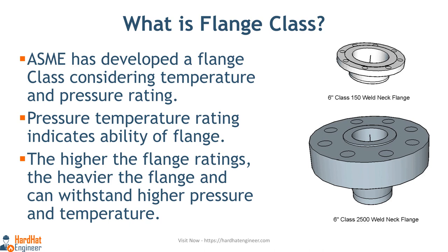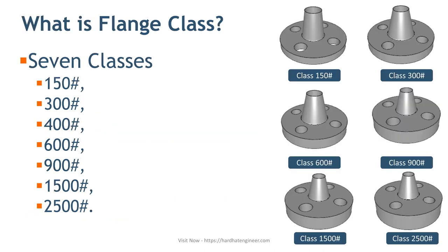As you can see in the image, there are 6-inch class 150 and class 2500 flanges. There are 7 flange classes: 150, 300, 400, 600, 900, 1500, and 2500. Out of these 7, class 400 is rarely used in process piping. As shown here, as the rating increases, the flange body thickness also increases.